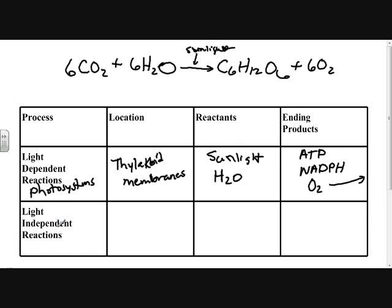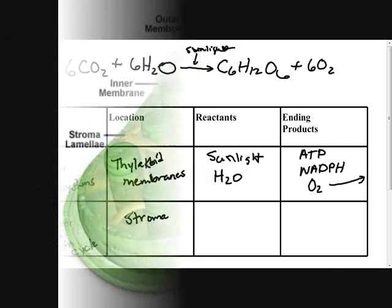The light independent reactions occur whether or not there's light. This involves the Calvin cycle, or you may hear it called the Calvin-Benson cycle. The location of the Calvin cycle occurs in the stroma of the chloroplasts, the liquid interior of the chloroplasts.